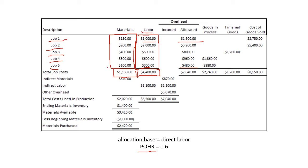These allocated costs are not actually the costs we incurred in each specific job — the problem is we cannot directly assign overhead costs to individual jobs because we don't know which jobs they belong to. At the bottom you can see our actual overhead costs: indirect materials $870, indirect labor $1,100, and other overhead such as utilities, supplies, and factory depreciation totaling $5,070. The total incurred overhead is $7,040.